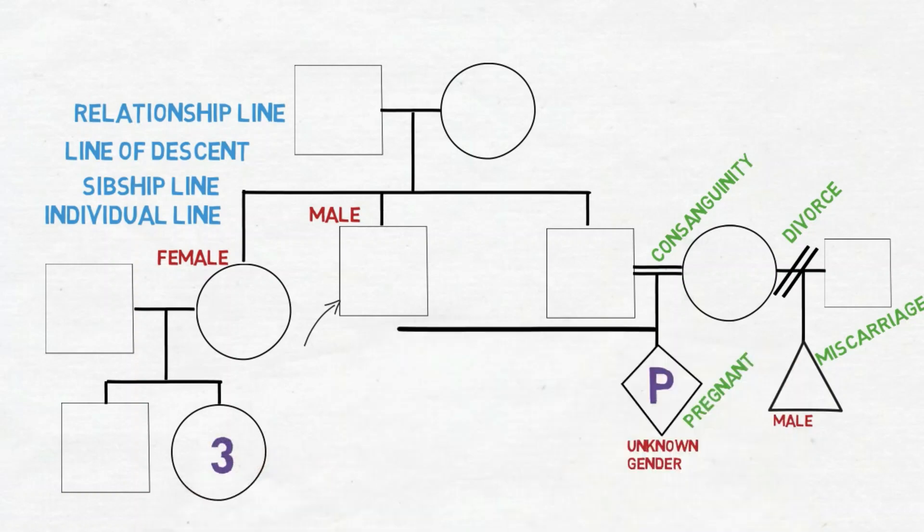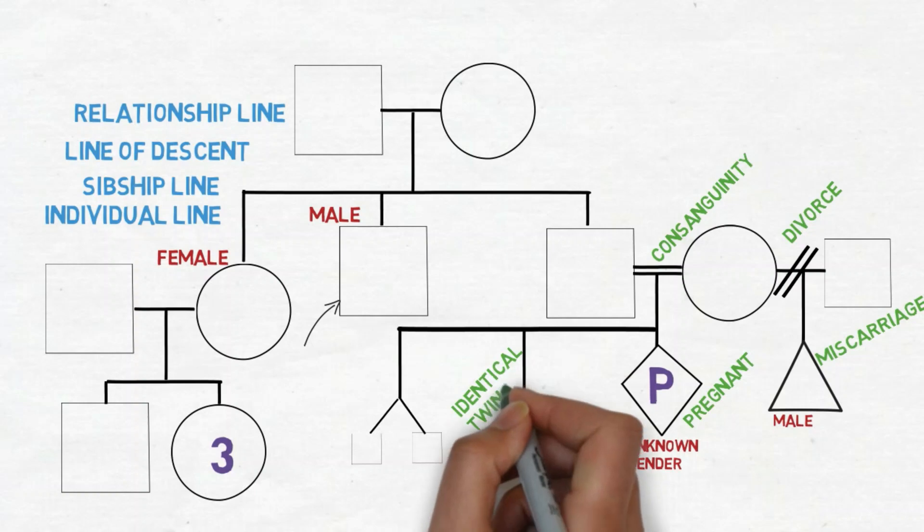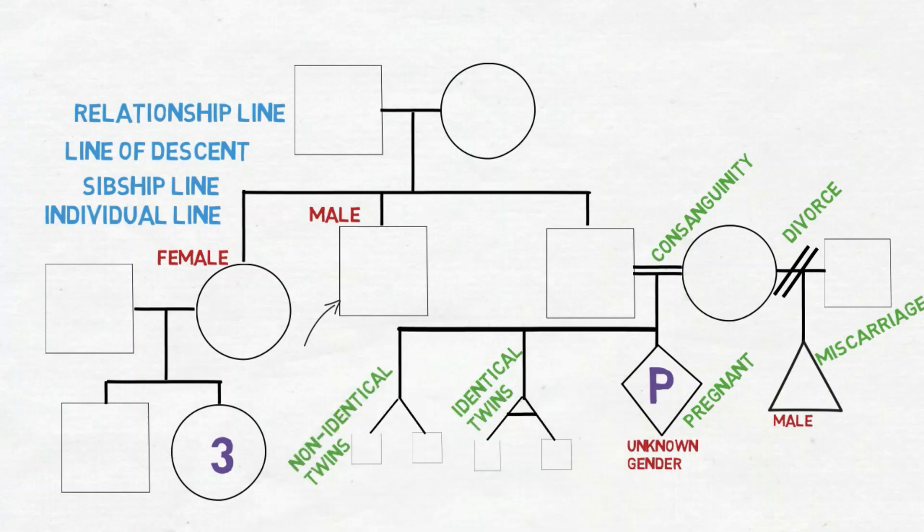Twins are unique because they share one individual line and then it branches off into two. For non-identical twins it just branches off into two and you draw the squares or the circles underneath. But for identical twins you have to actually connect the two lines that are branching off from the individual line.